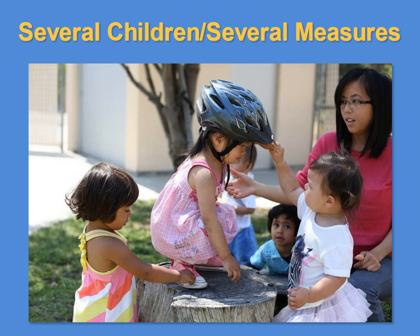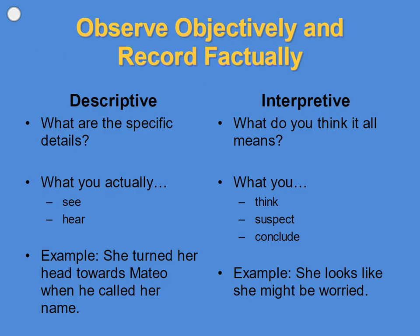You may gather information on more than one child in the same observation. For example, in this scene at least three infants and toddlers are interacting and sharing space. An observation can provide evidence for several measures when you include relevant details and keep your notes objective. Focus on observing and recording what the child does, not what you think the child is doing or what you think the child can do. Only record what you see or hear, and avoid using labels or qualitative descriptors such as 'shy' or 'scared.'